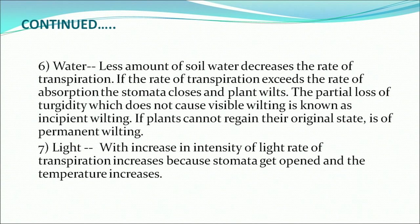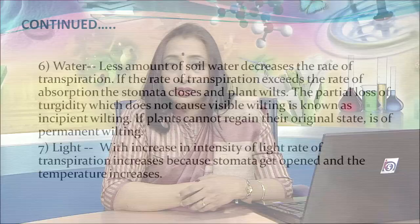There are two types of wilting. One is incipient wilting — the partial loss of turgidity which does not cause visible wilting. If the plants cannot regain their original state, that is permanent wilting. Light also plays an important role: with an increase in light intensity, the rate of transpiration increases because stomata get opened and temperature increases.